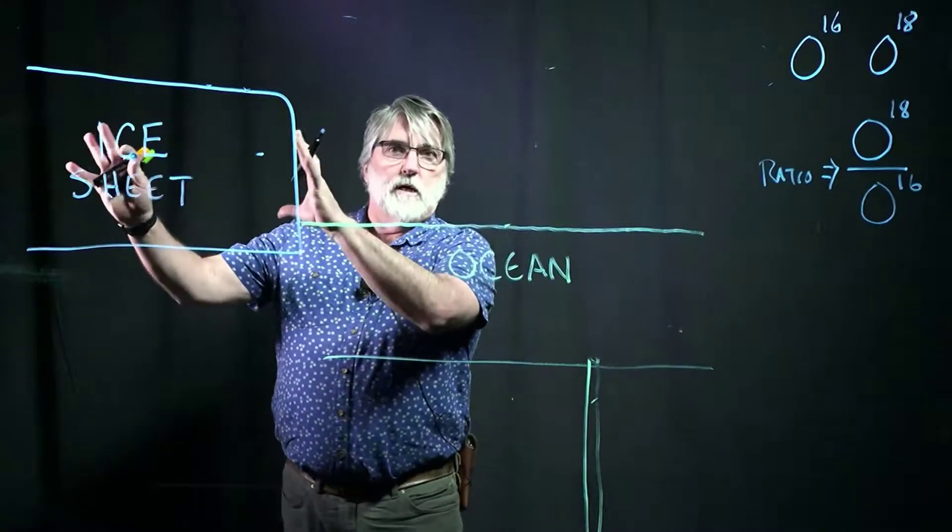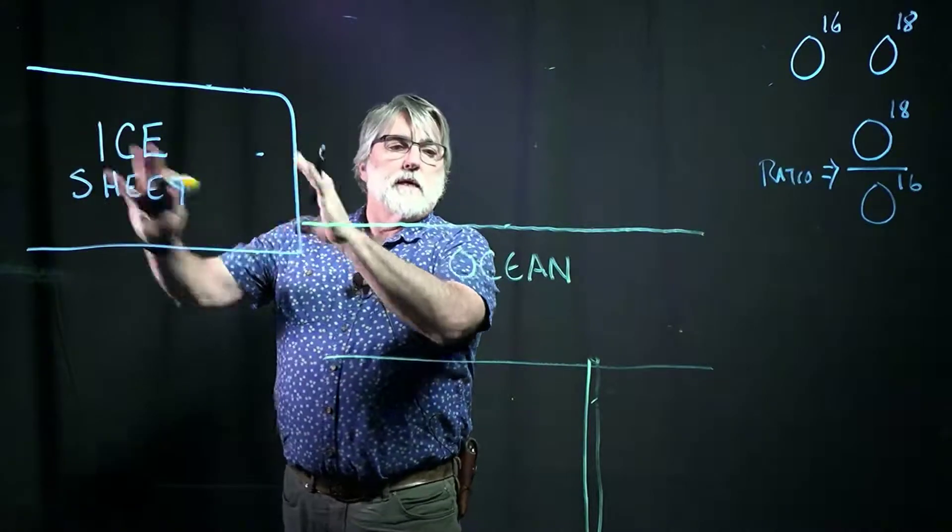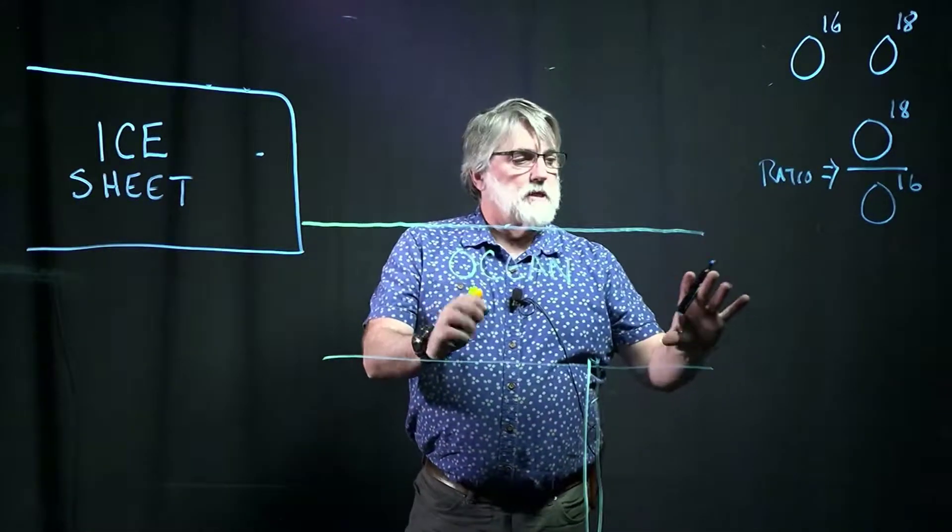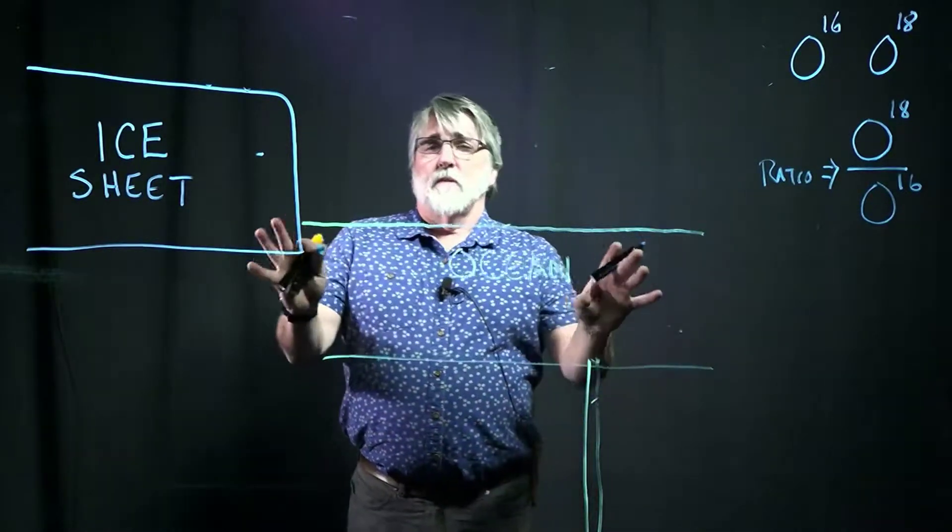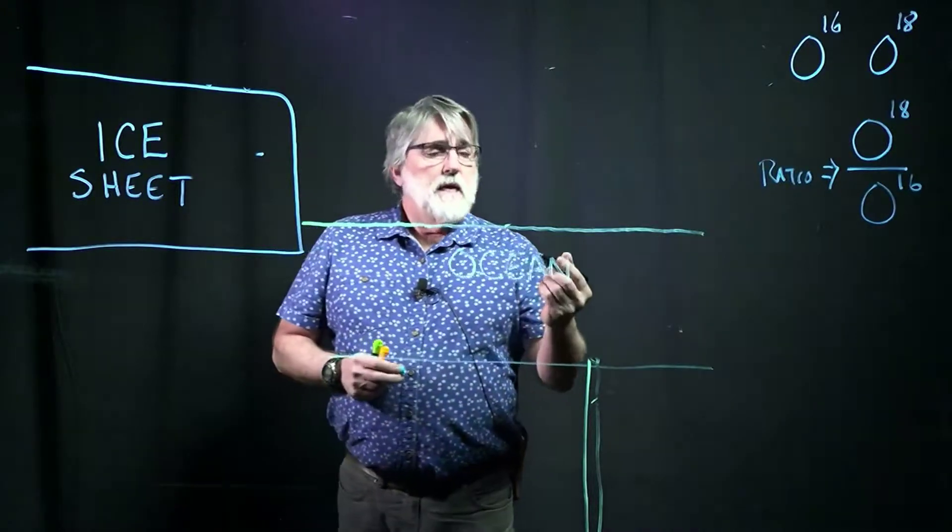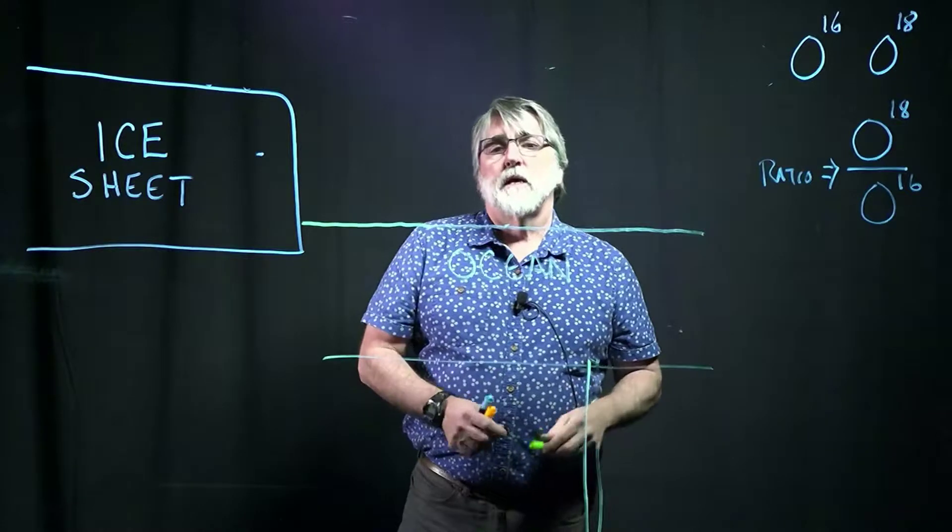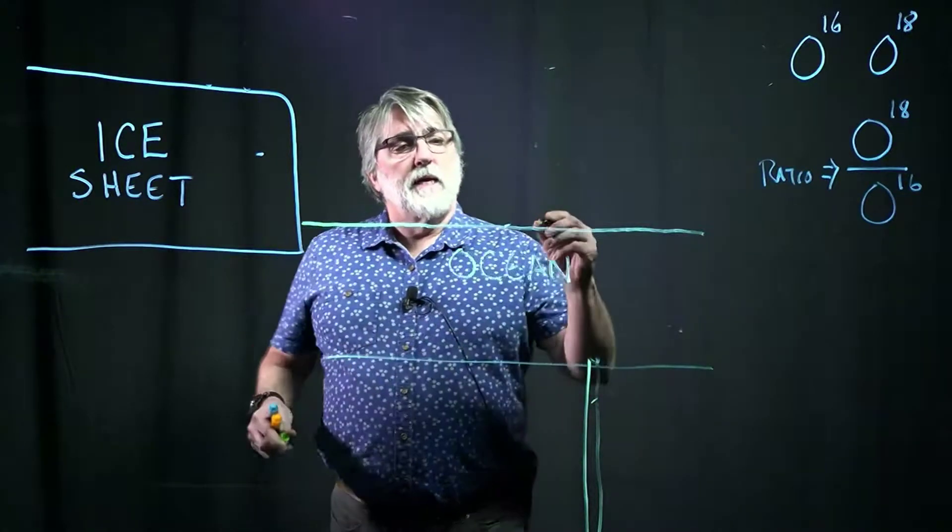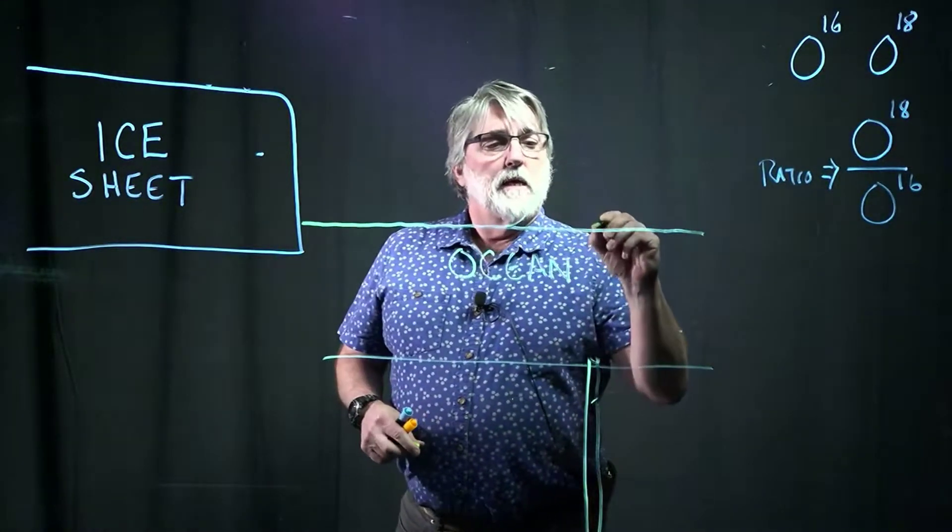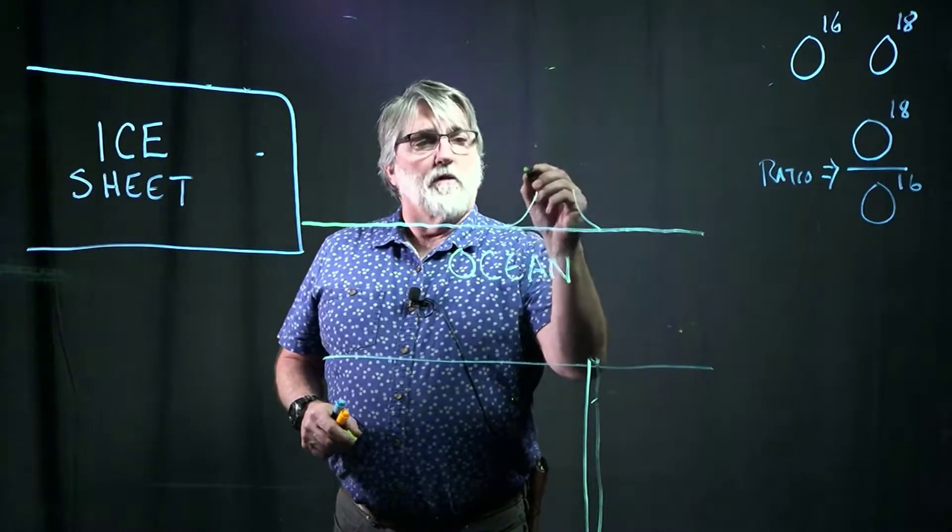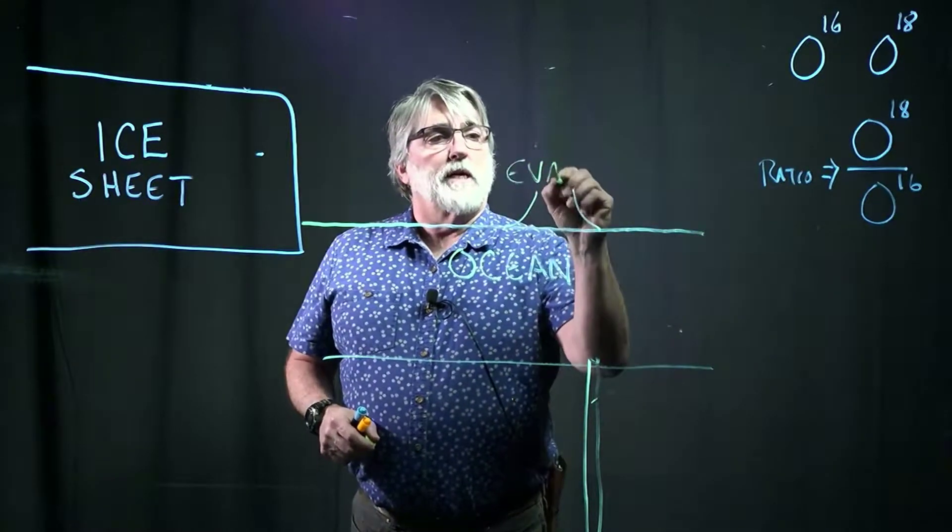All right, so now let's just think about a natural Earth system. We have a big ice sheet, Antarctica, Greenland, and we have the world's oceans sitting out here. And they obviously have a lot of oxygen in them.